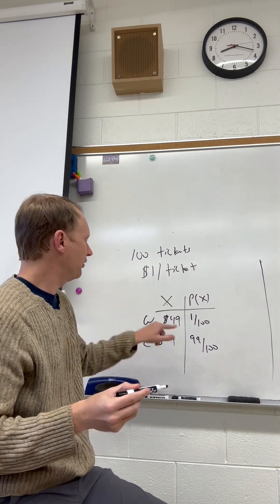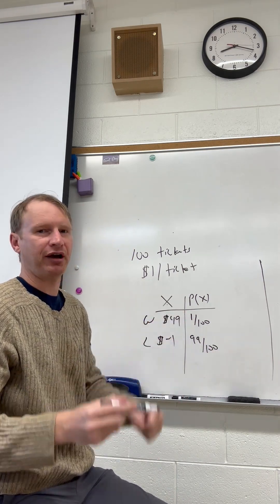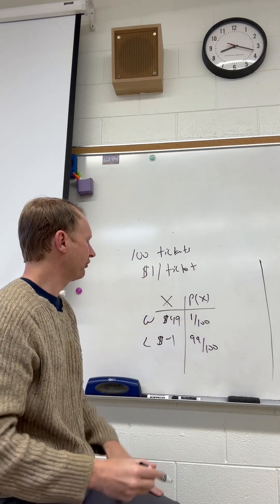Now to calculate the expected value, you take each x times each p of x and add up the results. So 49 times 1...